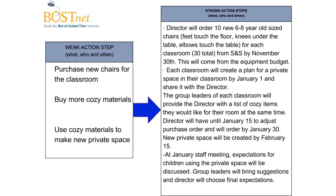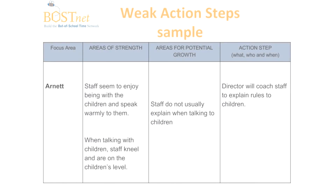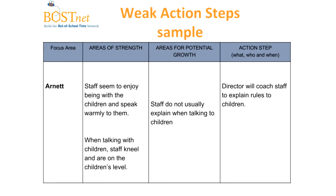That is how we move from weak action steps to strong action steps. It does mean that more discussion needs to happen surrounding them, but it also means that movement will be a lot smoother. Let's take a look at another example. This one looks at the Arnett tool. The areas of strength were that staff seemed to enjoy being with the children and speak warmly to them, and when talking with children, staff kneel and are at the children's level. The area for growth was that staff didn't usually explain rules when talking to children — specifically Arnett indicator number 16. The action step in place was that the director will coach staff to explain rules to children. But again, we're left wondering: when will this take place, what does it look like, and what is the end goal?